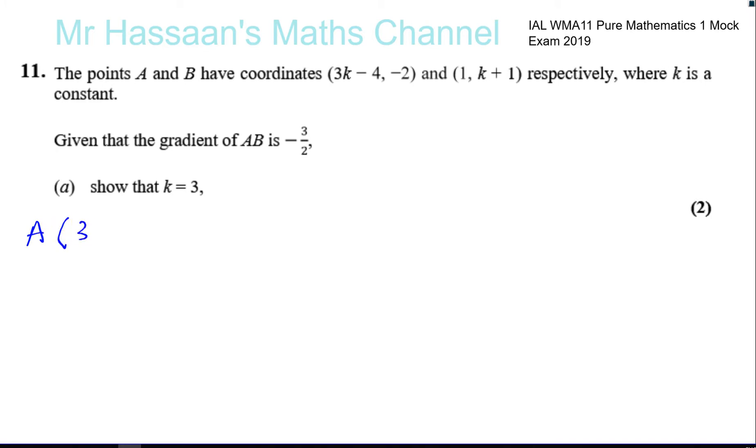So you've got A is 3k minus 4 and minus 2, so the x coordinate is 3k - 4 and the y coordinate is -2. And point B, you've got 1 for the x coordinate and k + 1 for the y coordinate. And the gradient of AB is -3/2, so the gradient of a line between two points is the change in y. So you're going to say, for example,